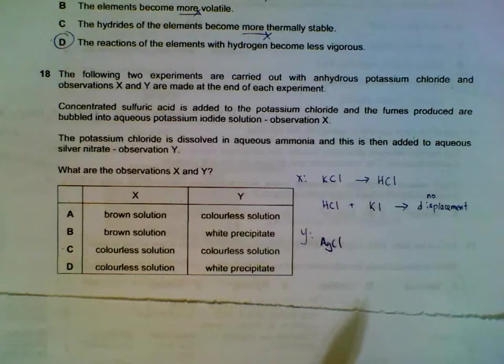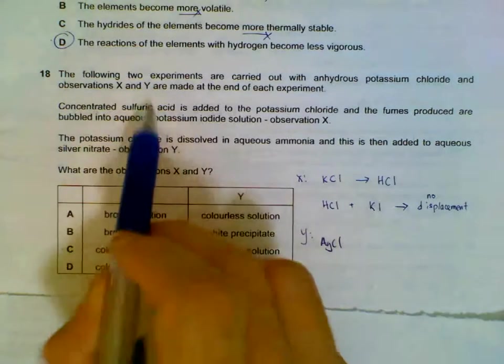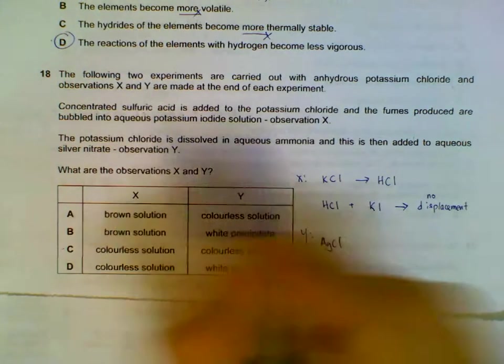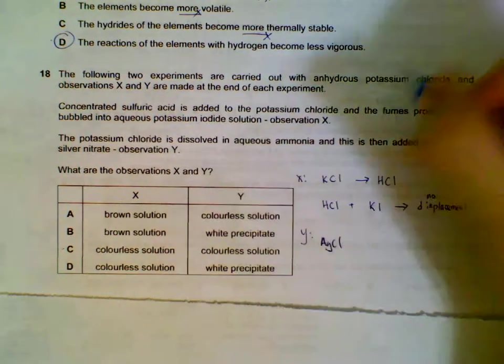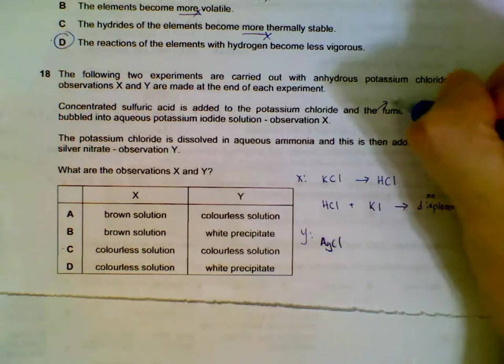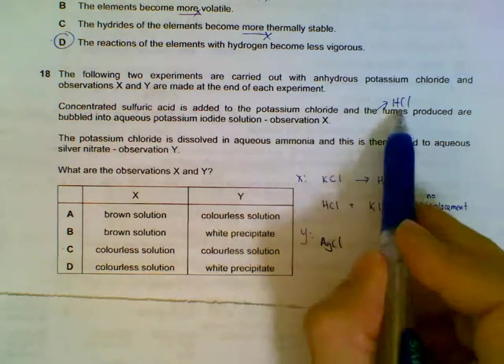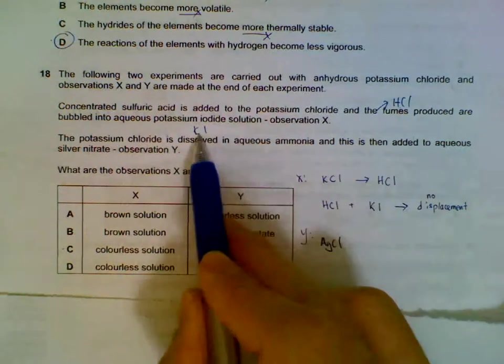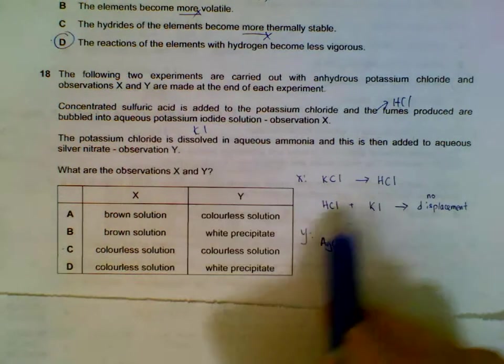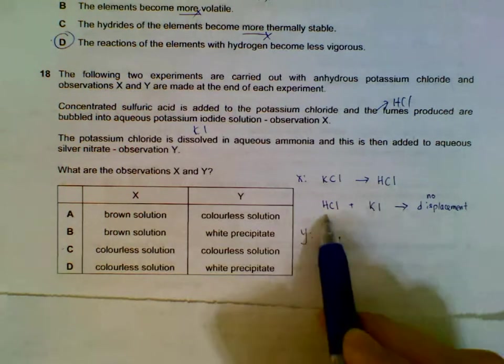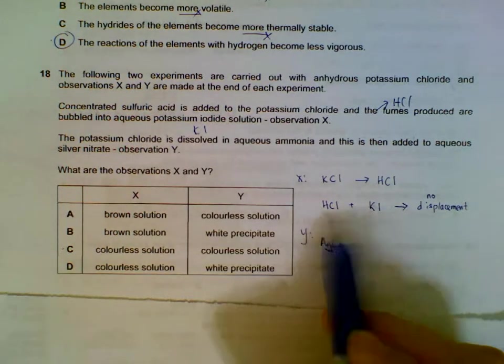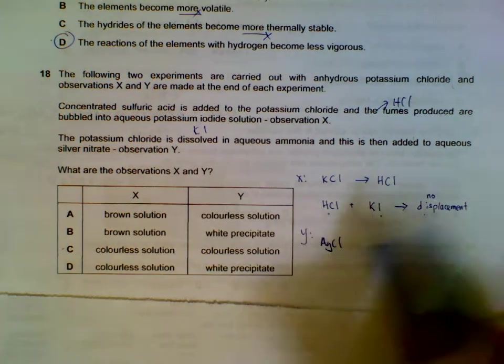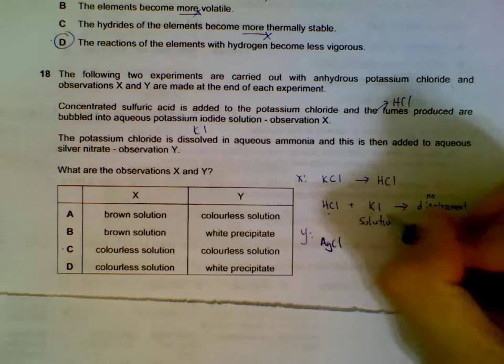Question 18: we have two experiments. The first reaction is when we have concentrated sulfuric acid and potassium chloride. The fumes produced will be hydrogen chloride and that is bubbled into potassium iodide. Hydrogen chloride bubbled into potassium iodide, there will be no displacement. We are not talking about chlorine bubbled into iodide, we are talking about hydrogen chloride into potassium iodide. No displacement, so the solution will remain colorless.